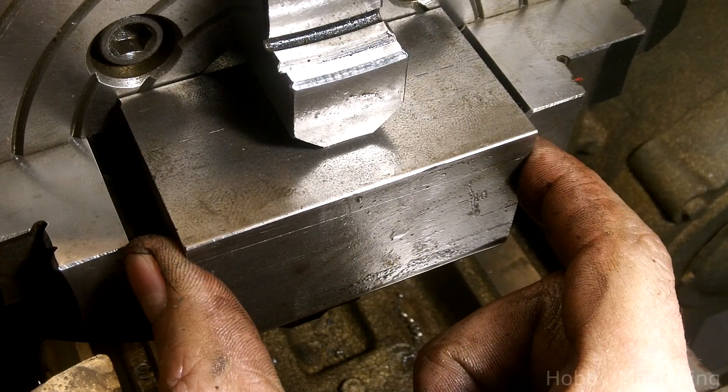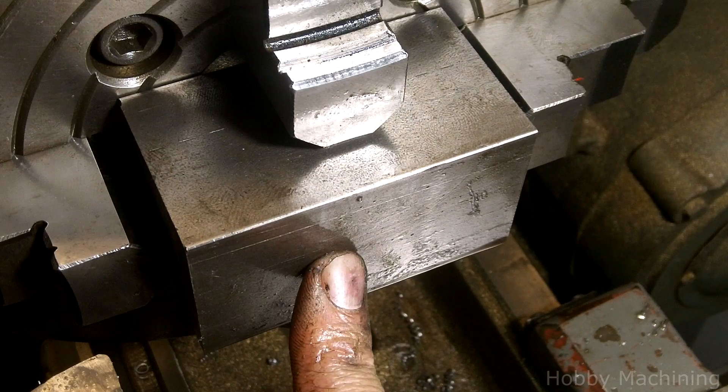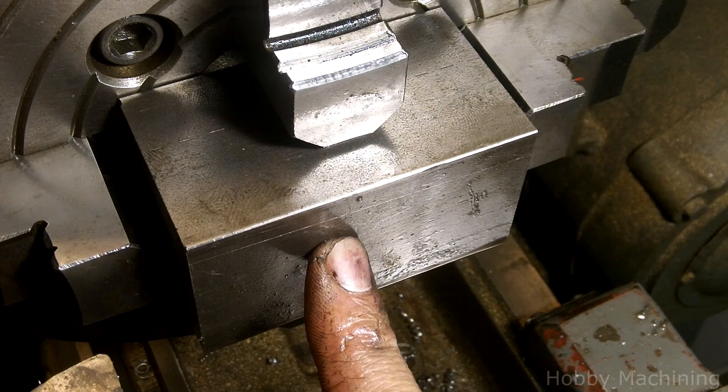So now that I've got the two cut ends squared I've gone ahead and flipped the block on its side and I'm going to cut one of the side surfaces.